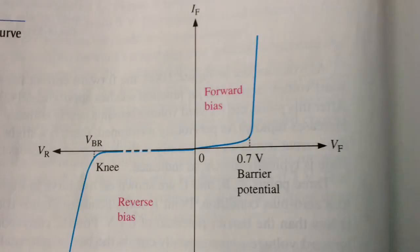the forward current increased very little until the forward voltage across the P-N junction reached approximately 0.7V, at the knee of the curve, which is the barrier potential. After this point, the forward voltage remains nearly constant at approximately 0.7V, but the IF increases rapidly.